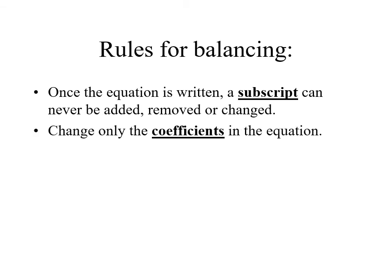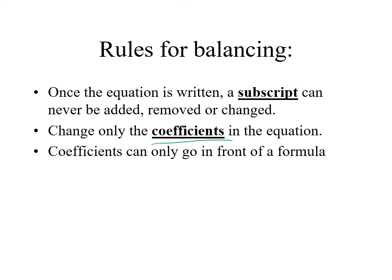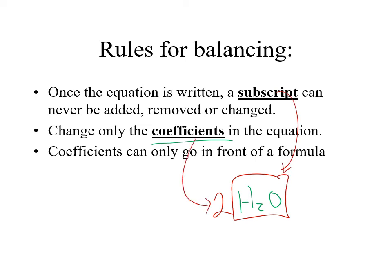Instead, what you're going to be doing is adding coefficients — which might mean as you change one, you have to go back and change another. Make sure coefficients go in front of the entire species. If you have H2O and you want two oxygens, you can't put the coefficient in the middle — it has to go out front of the entire species, and it will apply to everything inside that formula.